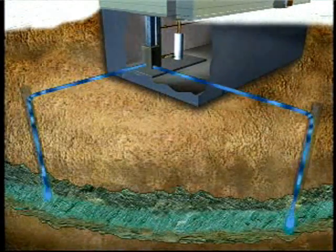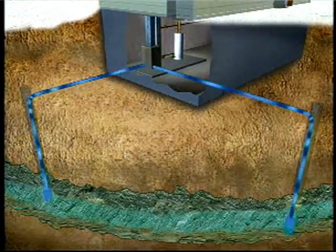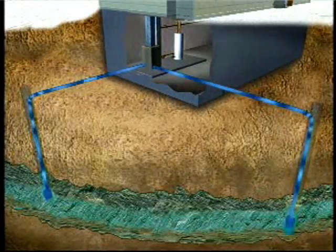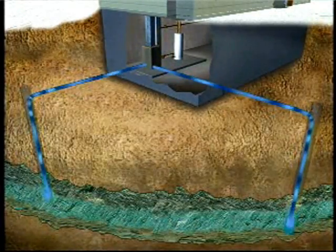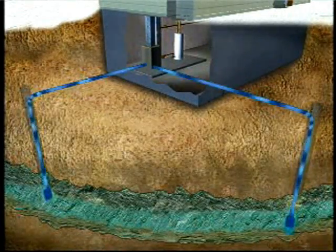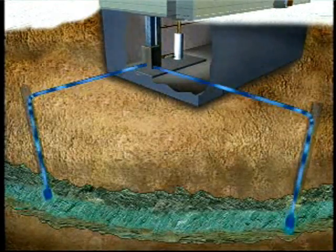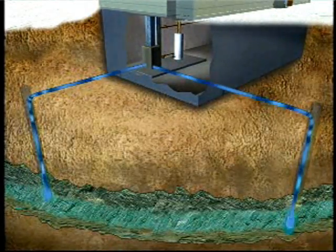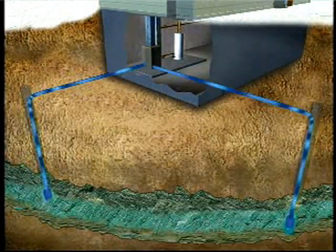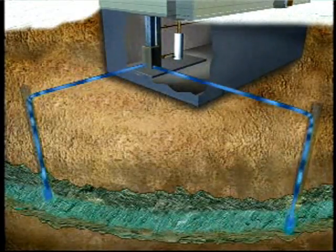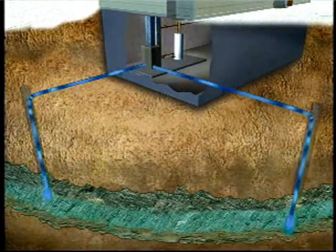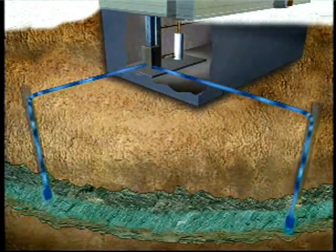In an open-loop system, on the other hand, groundwater from an aquifer is pumped through one well and passes through the heat pump where heat is added to or extracted from it. The water is then discharged back to an aquifer or harnessed for other water management uses. Because the system's water supply and discharge are not connected underground, the loop is open.